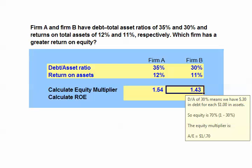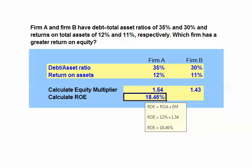We can now go ahead and calculate our return on equity. Recall that return on equity equals ROA multiplied by the equity multiplier. For Firm A,